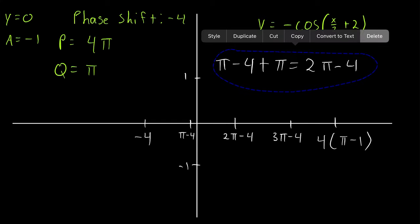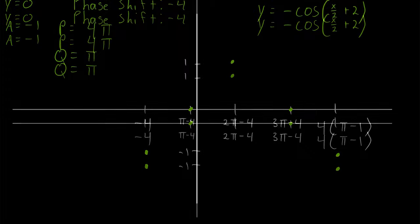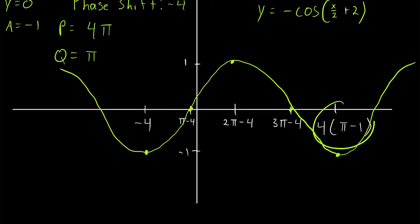Now we graph the points. This is a cosine function multiplied by a negative number, so instead of starting at its peak, it starts at its lowest point. Then it goes up to the midline, up to its peak, back down to the midline, and back down to its lowest point. We sketch that period, and we could keep going by adding or subtracting more quarter periods.